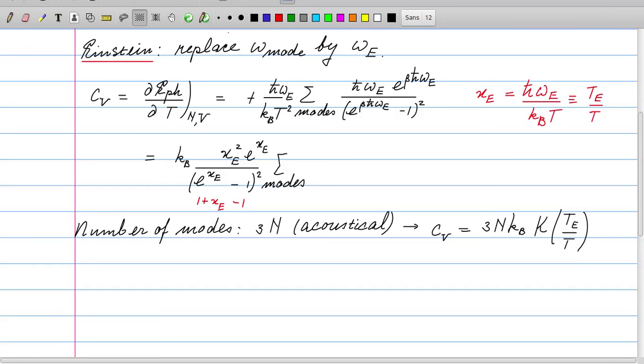At high temperatures we should recover the Dulong-Petit result, which is 3N times k_b. What is k? k is precisely the function involving the x, without the k_b in front. It's easy to verify that for small x_e, so x_e a lot smaller than 1, we find that k(x_e) equals 1.